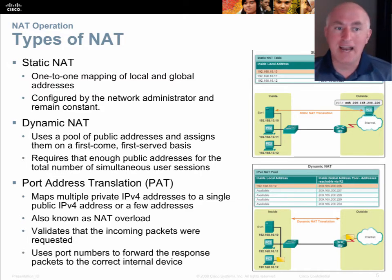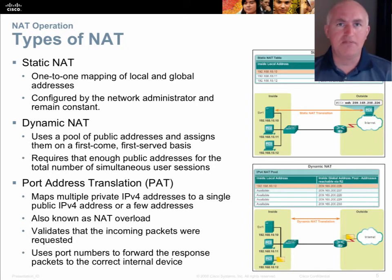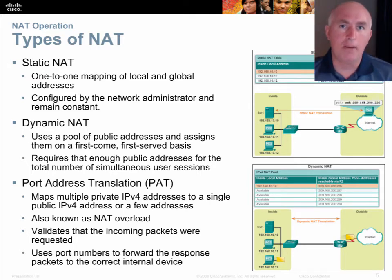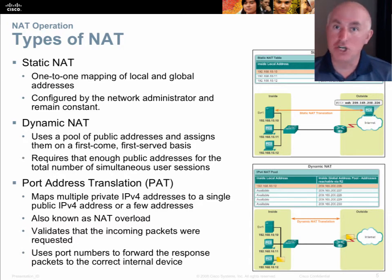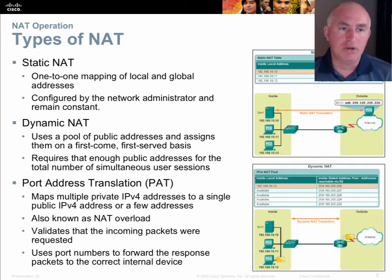Dynamic NAT is where you set aside a pool of public addresses that can be used — kind of like checking out books at a library. Say you had seven books; the first seven patrons to come to the library get them. The eighth patron gets told the book is out. Now imagine those books are IP addresses — if you're the eighth device, you don't get on the internet until one of those IP addresses gets checked back in. It's not the most popular way to do NAT, and it wastes public addresses that may just be sitting there unused.